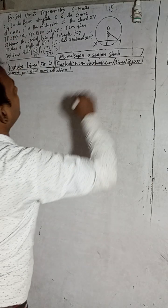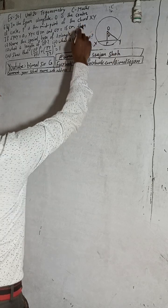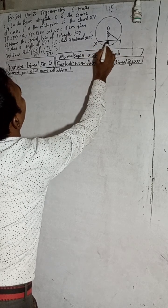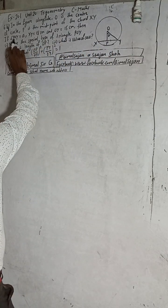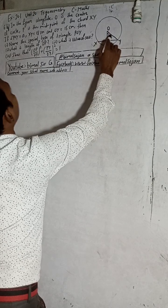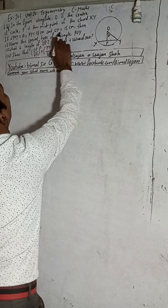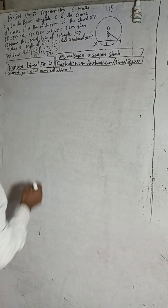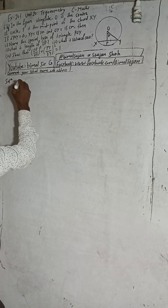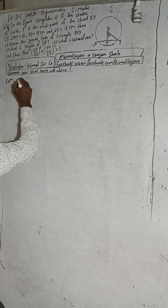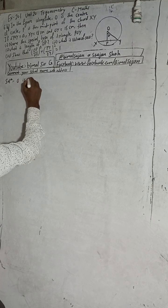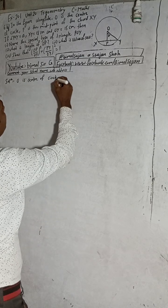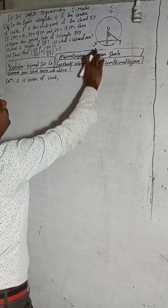In the figure alongside, O is the center of the circle. P is the midpoint of the chord XY — this P is the midpoint, meaning XP is equal to PY. Angle POY is equal to alpha. XY is equal to 18 cm, and OY is given. Now I will write the solution in the given parts.